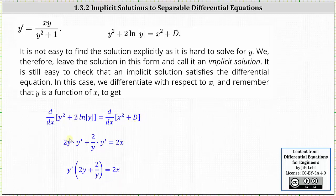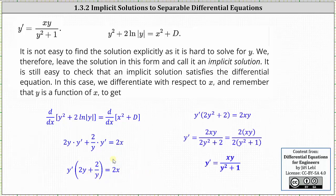Next, we factor out y prime from the left, which gives us y prime times the quantity two y plus two divided by y equals two x on the right. Next, let's clear the fraction from the equation by multiplying both sides by y, which gives us y prime times the quantity two y squared plus two equals two xy. Next, we solve for y prime by dividing both sides by the quantity two y squared plus two.